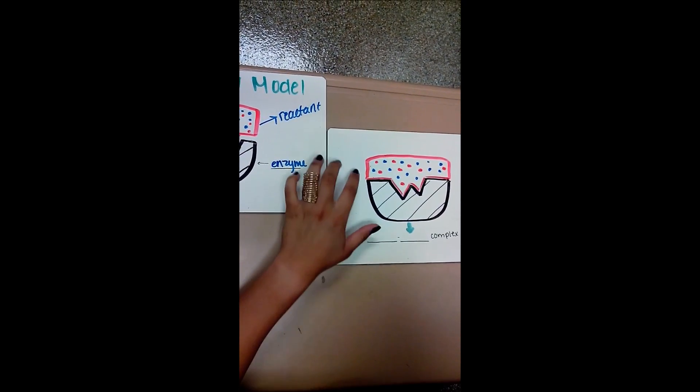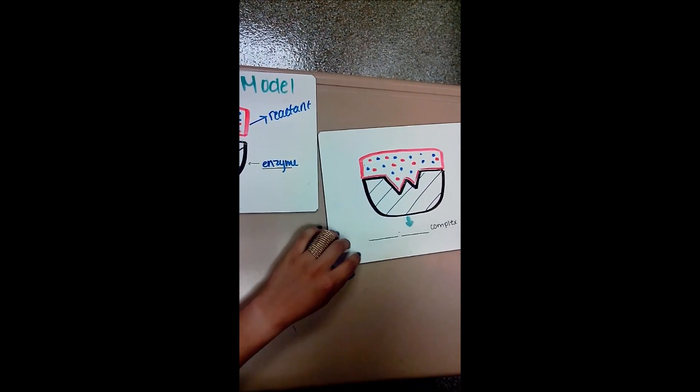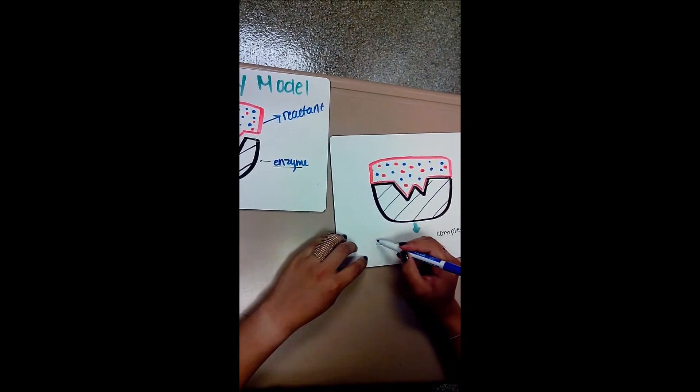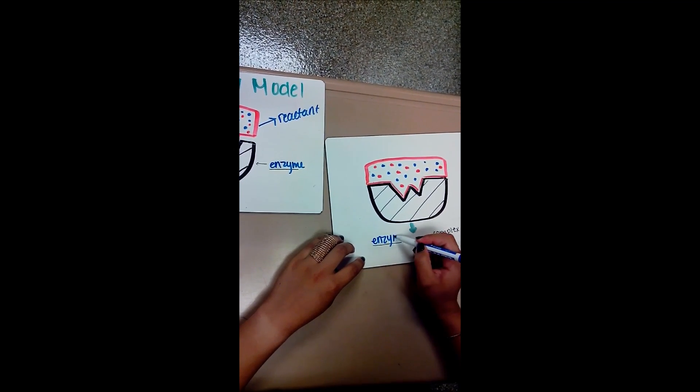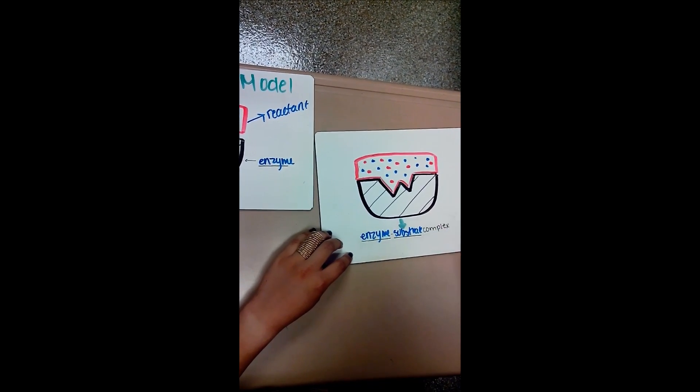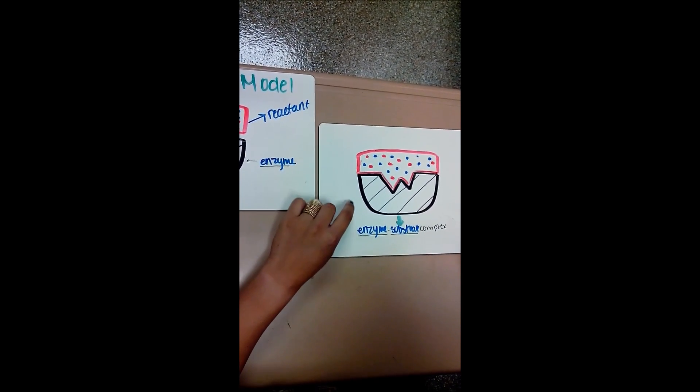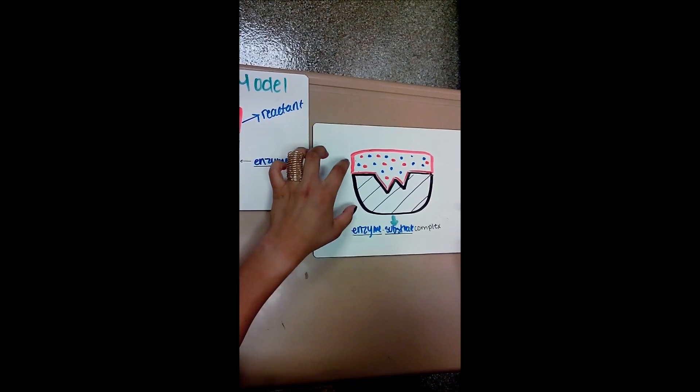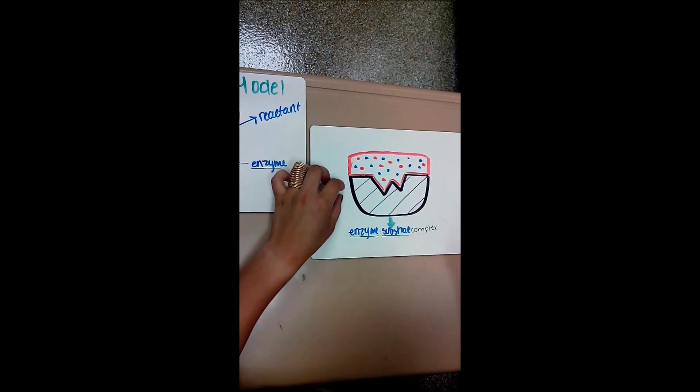When the reactant combines with the enzyme, this is called an enzyme-substrate complex. Here you can see that the enzyme and the reactant are interlocked.